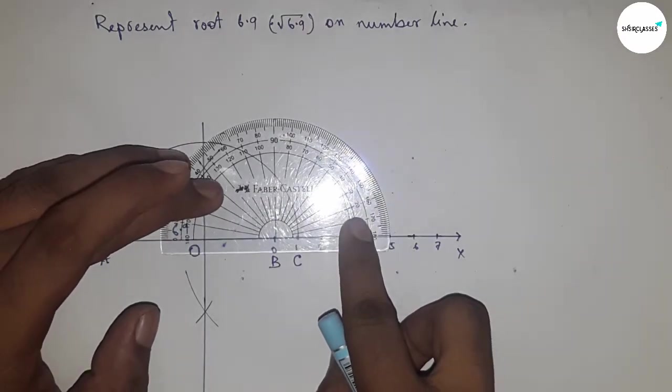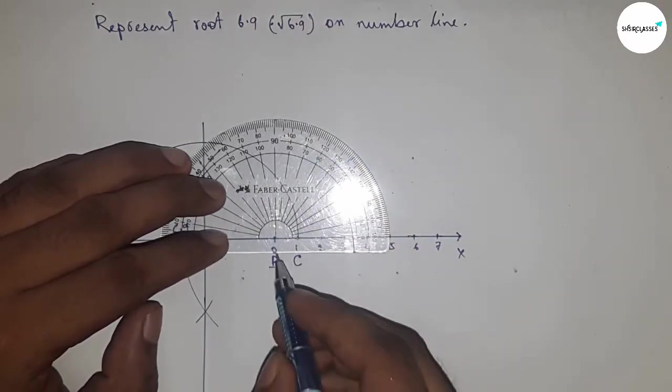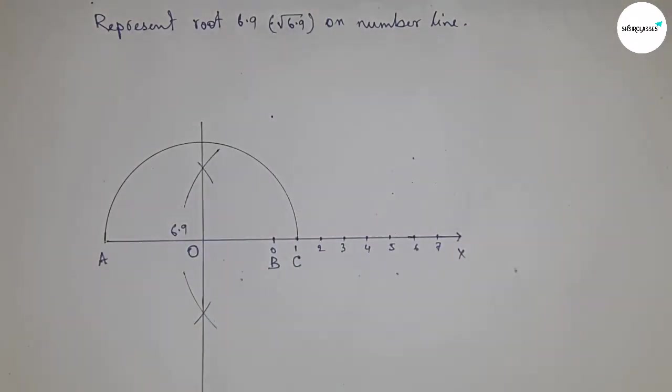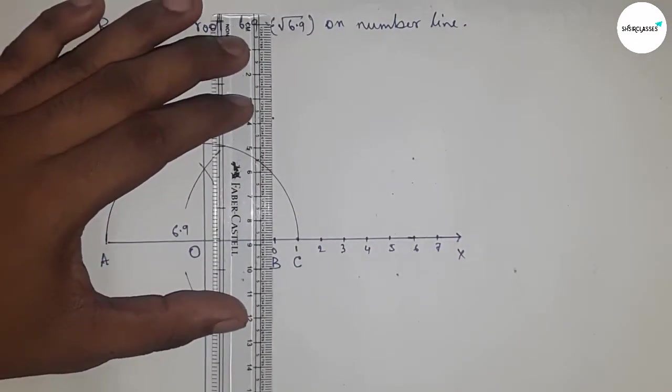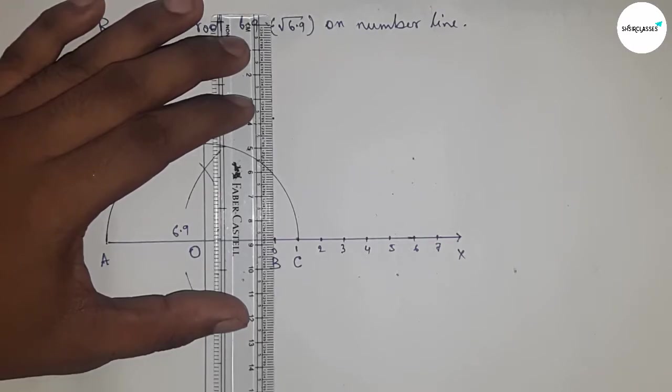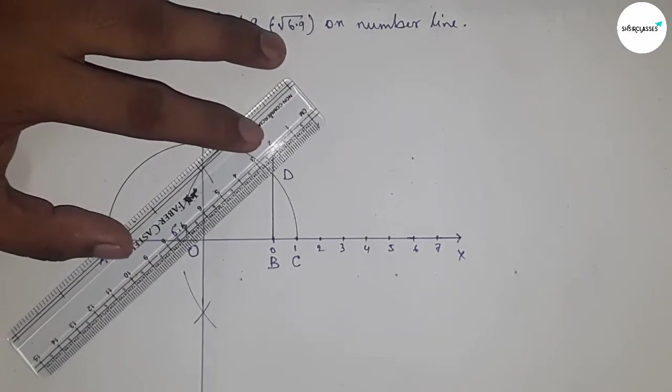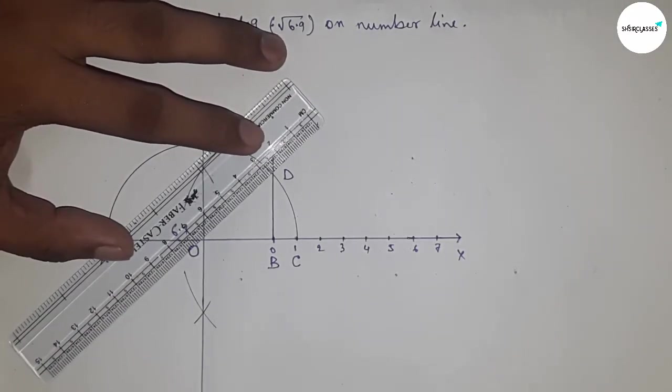Draw a 90-degree angle on point B. Next, join this which meets the semicircle at point D. Now join O and D.